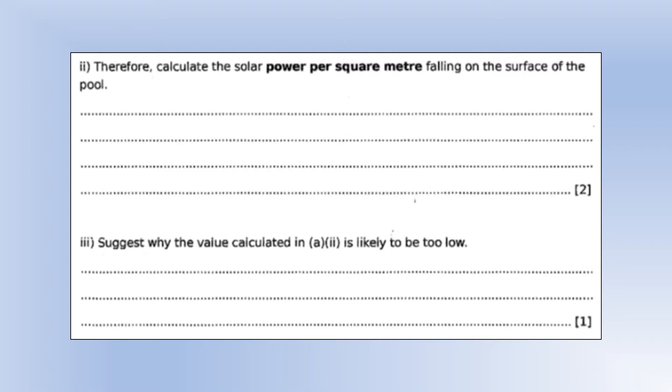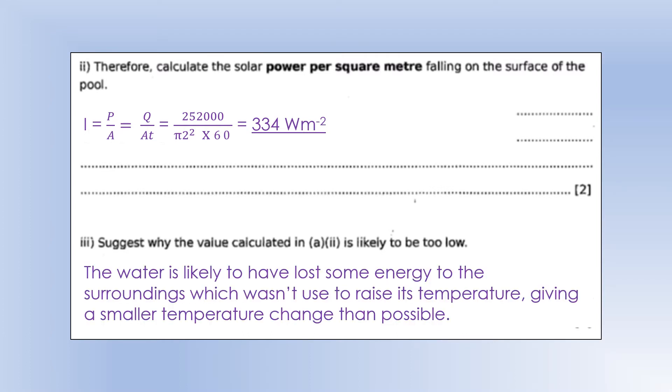Therefore calculate the solar power per square meter falling on the surface of the pool. We just calculated the amount of energy supplied to each 20 kilograms, but we're told that there are 20 kilograms per minute moving through the pool. Solar power per square meter is also known as intensity. We're going to need to do intensity is power per unit area. Power is energy supplied per unit time. So, we calculated the energy, we know it's one minute, and the area we're going to get doing pi r squared gives us an intensity or a power per square meter of 334 watts per meter squared. Why is the value calculated likely to be too low? Well, the water is likely to have lost some energy to the surroundings, which would have meant it would have had a larger temperature rise if it hadn't, which would mean that a larger solar intensity is probably expected.